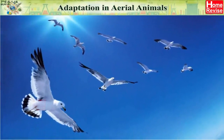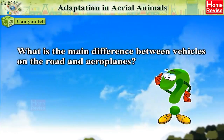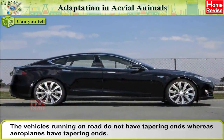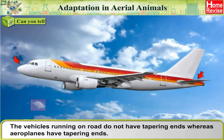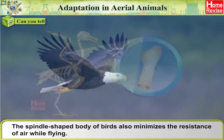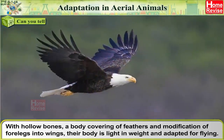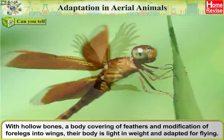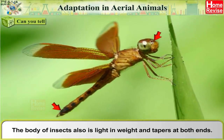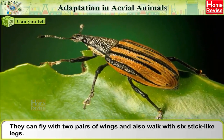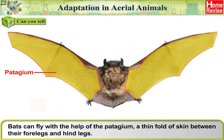Adaptation in Aerial Animals: What is the main difference between vehicles on the road and aeroplanes? Vehicles running on road do not have tapering ends, whereas aeroplanes have tapering ends. The spindle-shaped body of birds also minimises the resistance of air while flying. With hollow bones, a body covering of feathers, and modification of four legs into wings, their body is light in weight and adapted for flying. The body of insects is also light in weight and tapers at both ends. They can fly with two pairs of wings and walk with six stick-like legs. Bats can fly with the help of the patagium, a thin fold of skin between their fore legs and hind legs.